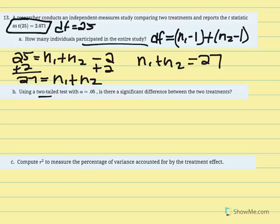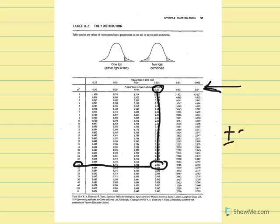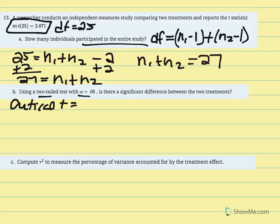Part B: using a two-tailed test with alpha equal to 0.05, we find our critical t using degrees of freedom of 25 in our t table. Looking at the two-tailed tier at 5% with 25 degrees of freedom, we get critical t equal to plus or minus 2.060.